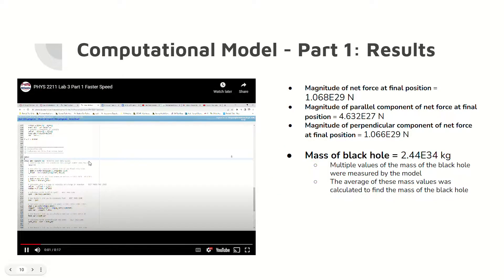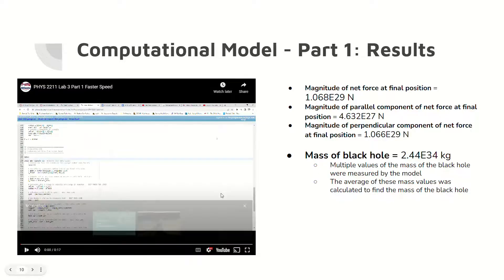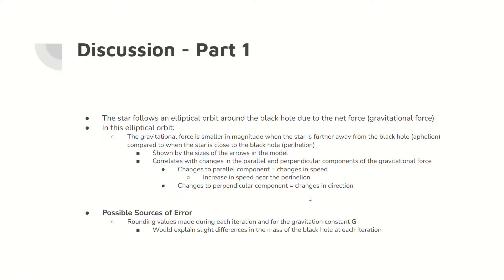Here are the results of part one of the lab. The mass of the black hole is roughly 2.44 times 10 to the 34 kilograms, which is calculated by finding the average of the black hole mass values from the iteration step. The star follows an elliptical orbit, where the magnitude of the gravitational force on the star is less at the farthest point from the black hole than near the closest point. A possible source of error is rounding values made during each iteration and for the constants, which explains the different mass values at each iteration.